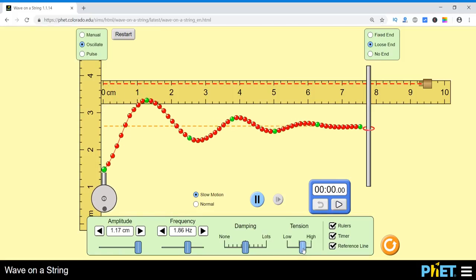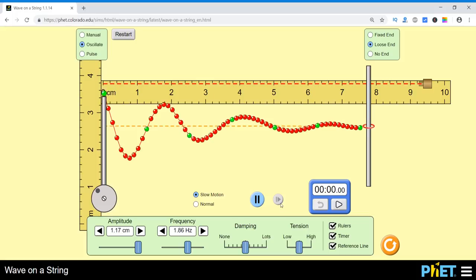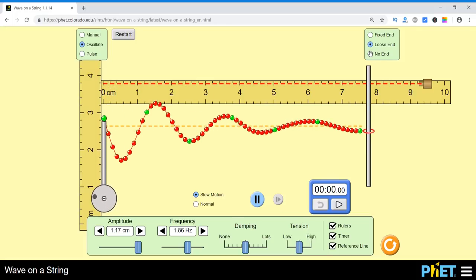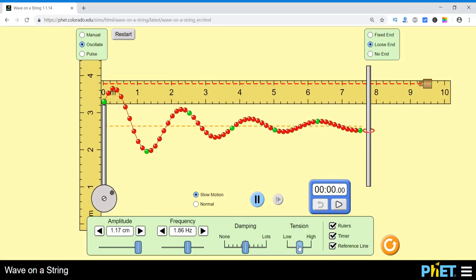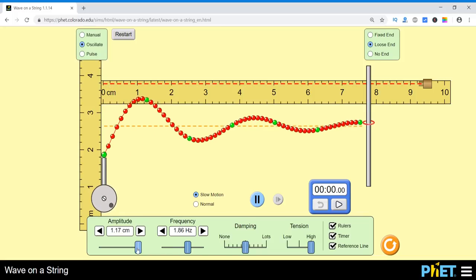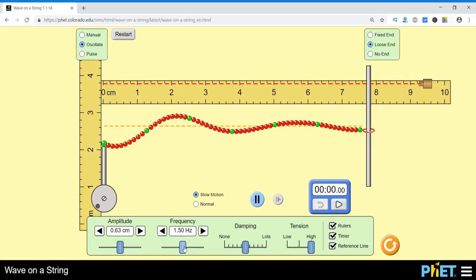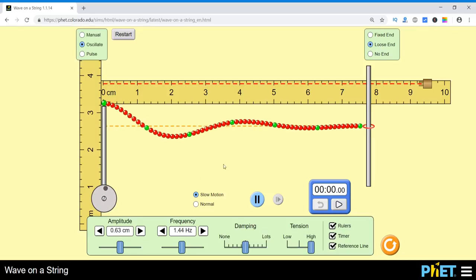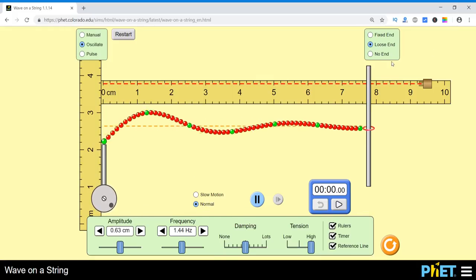So you can see the variations by changing this scale. Now, let me make the tension high and reduce the amplitude to a medium level and frequency, let me reduce it also. So it is now loose end. Now it is normal speed. So we are just playing with it by varying various parameters.